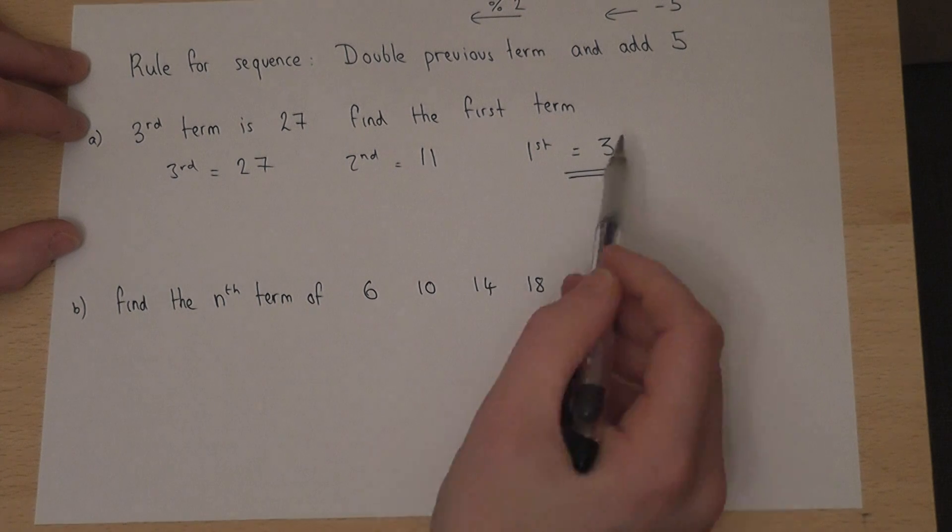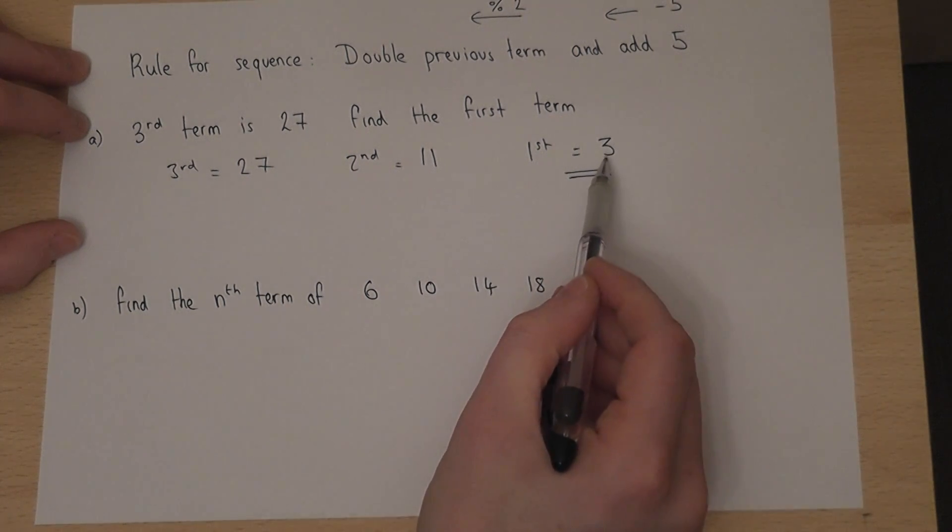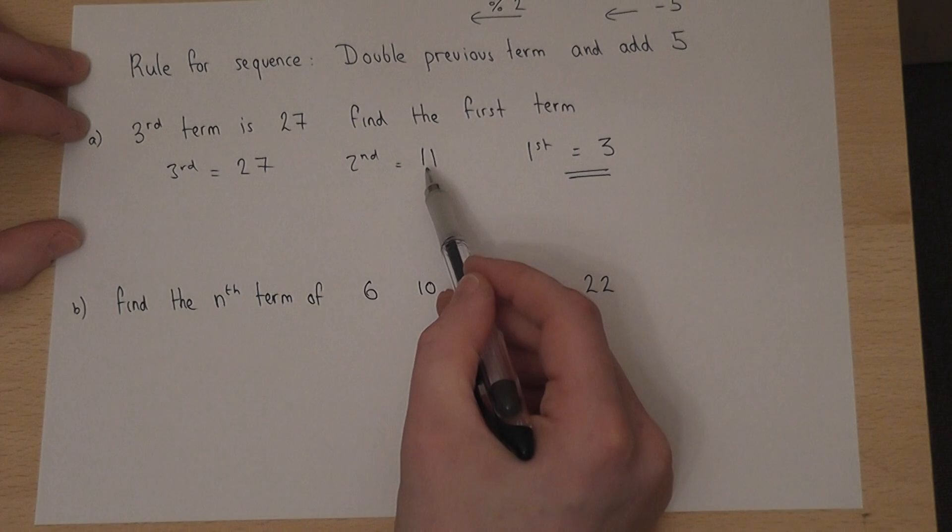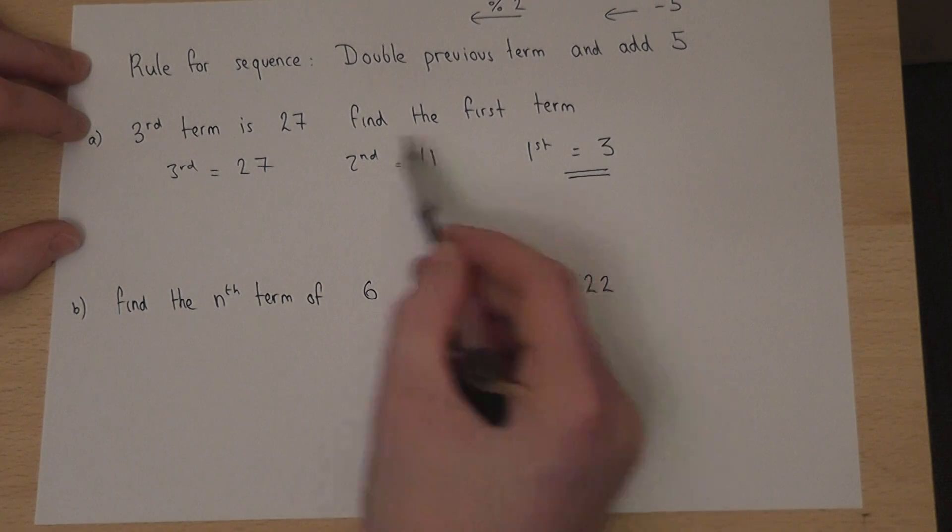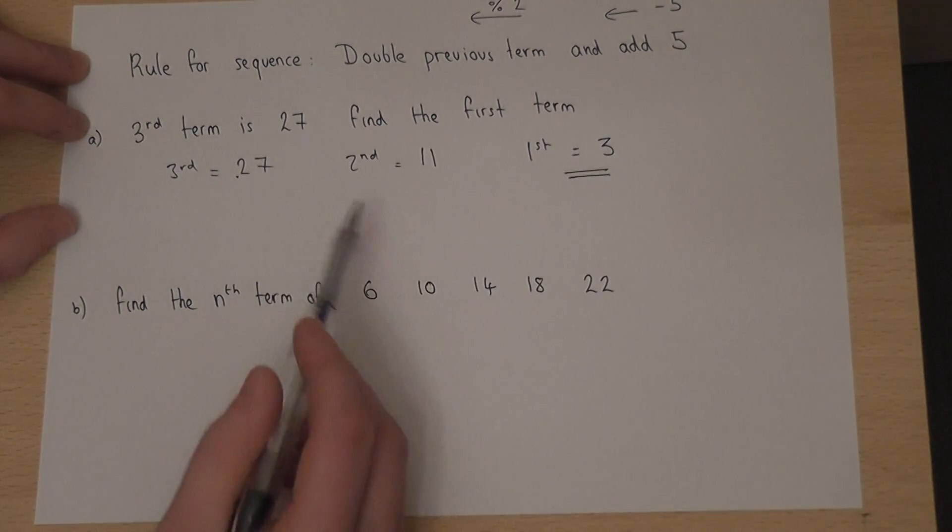We can check that 3 times 2 is 6, plus 5 is 11. 11 times 2 is 22, plus 5 is 27. That just confirms our process.